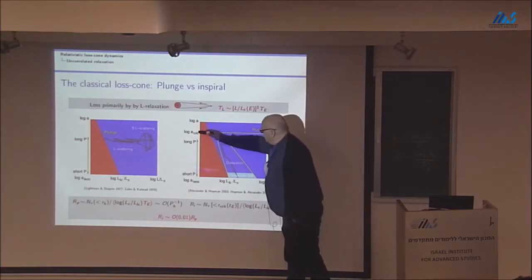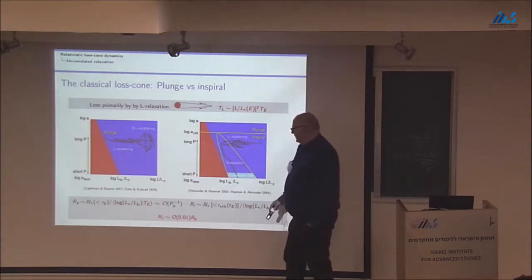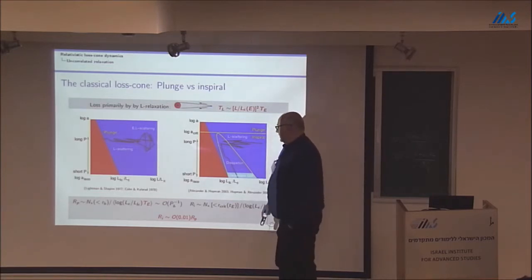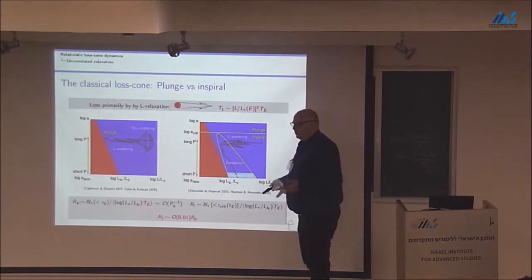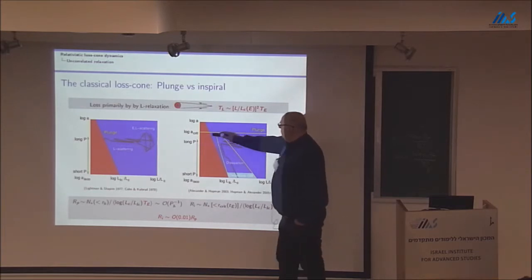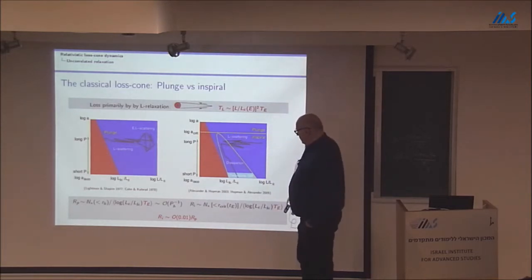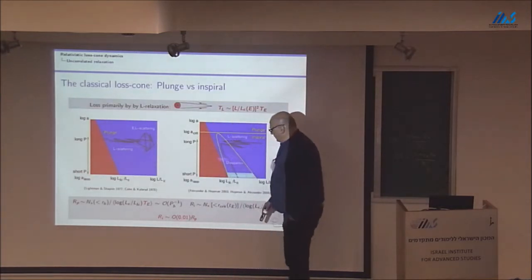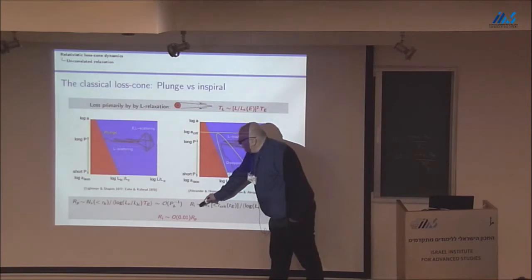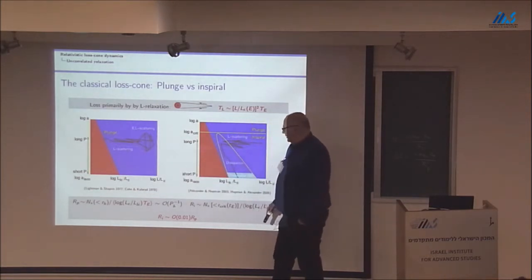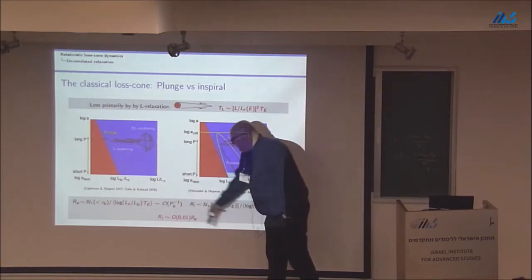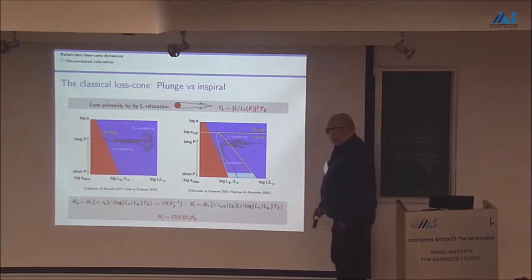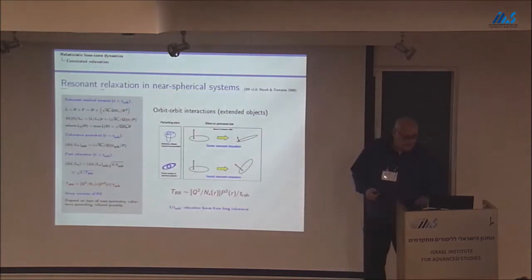And it turns out when you do the analysis that the rates for in-spiral have a very similar functional form, only you have to evaluate everything at this critical semi-major axis. And because this is typically, for example, when you compare the rate for tidal disruption to the rate to in-spiral by tidal heating, you find that the number of stars in this region is much, much smaller than the number of stars in the entire range of influence. So roughly the in-spiral ratio is always much smaller than the plunge ratio. And it comes out that under several typical scenarios that you can think of, it's say 1% or 0.1%. So in-spirals are always more rare.